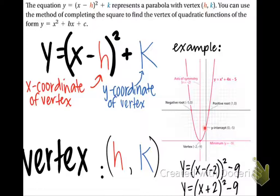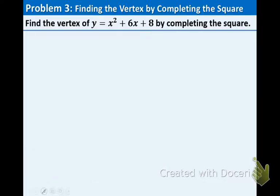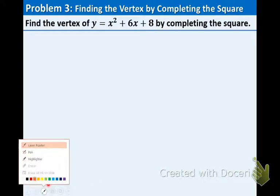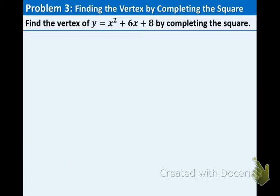And the y-intercept is always the c value of the quadratic. So now that's a nice little review of previous sections and we will jump into example three. And in this one, what we're asked to do is find the vertex of this given quadratic. And we have y equals x squared plus 6x plus 8.